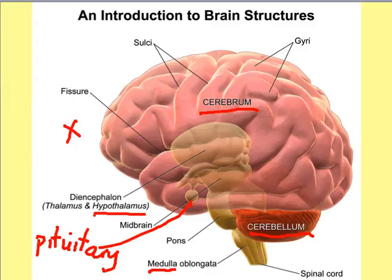These are the main structures to talk about. When looking at the brain side on, remember there's a mirror image on the other side — we're only looking at the side facing us. This side is called a hemisphere, and there's another hemisphere on the other side.